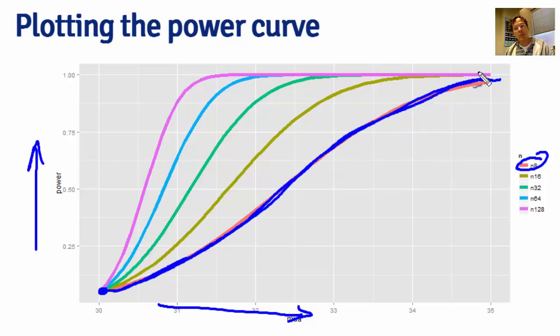And then what you can see is that power increases as mu-a gets larger. And basically that means we're more likely to detect a difference if the difference we want to detect is very big. And that makes a lot of sense. If something's a huge effect, we should be very probable, it should be very probable to detect it.